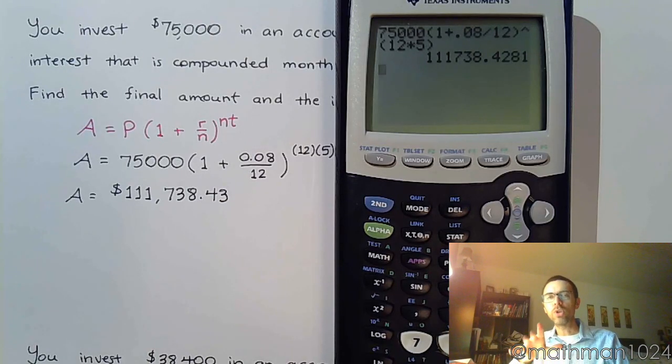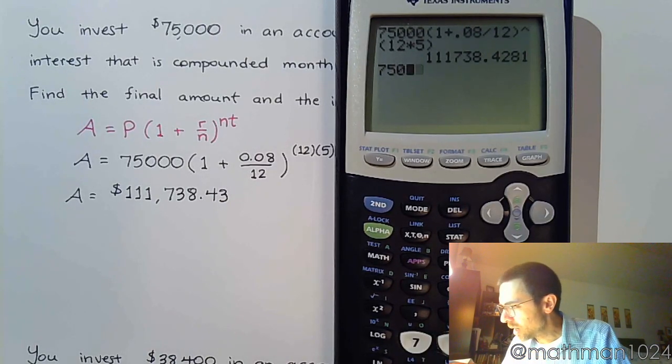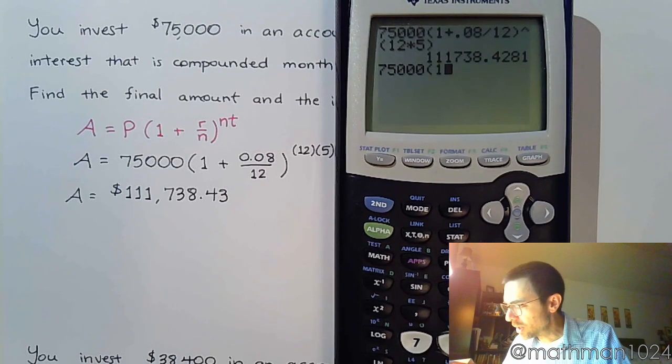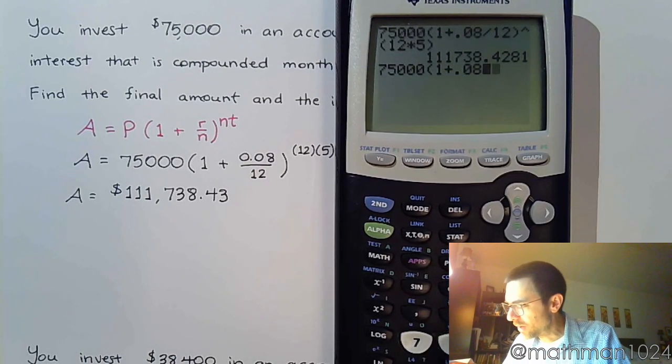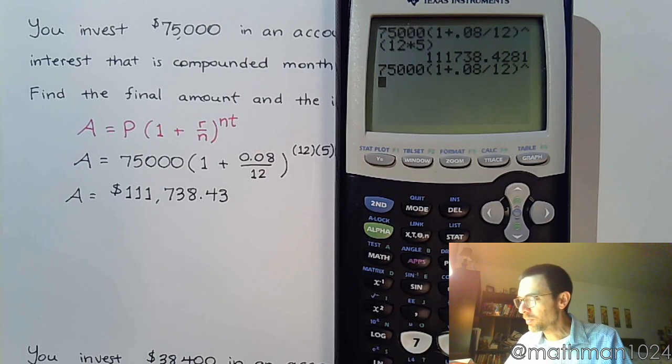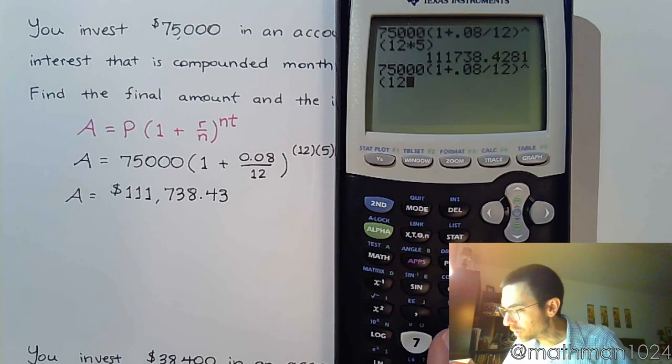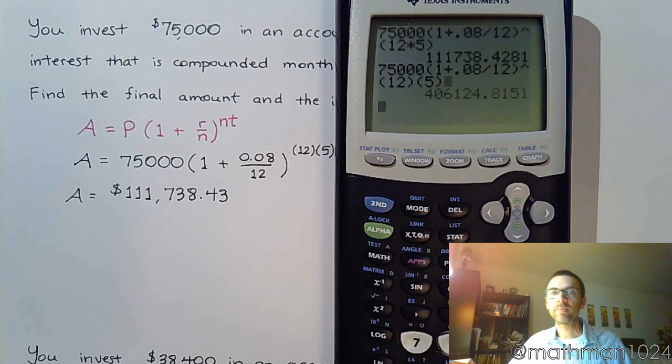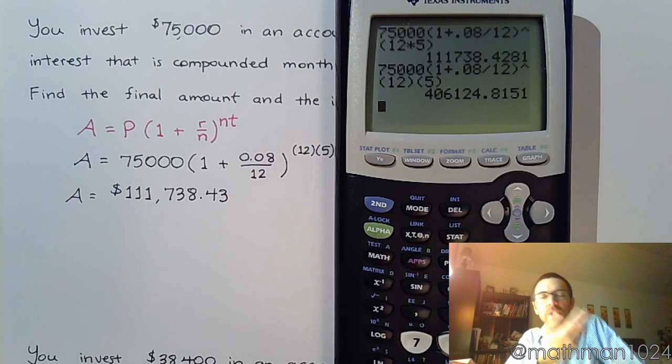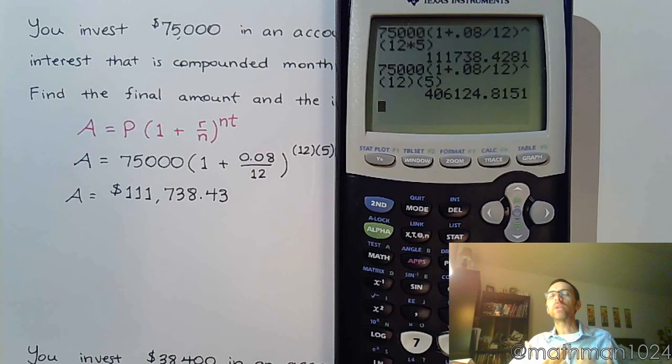Now, let me show you what happens when you don't type this into the calculator correctly. If I just do $75,000, 1 plus .08 divided by 12, raise to the, if you just do, suppose you do parentheses, and you do parentheses 12, close, and then parentheses 5 like this. So, now you've got $406,000. And, you may be thinking, well, how do I know what sounds appropriate?